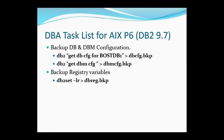This was the DB2 task list we performed for the AIX P6 machine. We backed up the DB and the DBM CFG configurations, and we also backed up the registry variables. These DB CFG and DBM CFG files were backed up as a precautionary measure, so we could reference configuration parameters later on the new AIX DB2 machine.